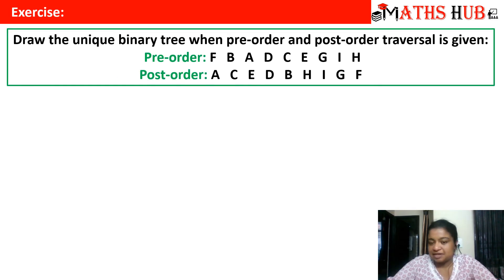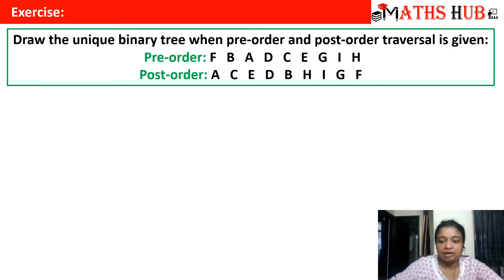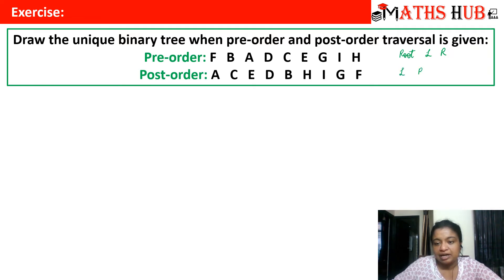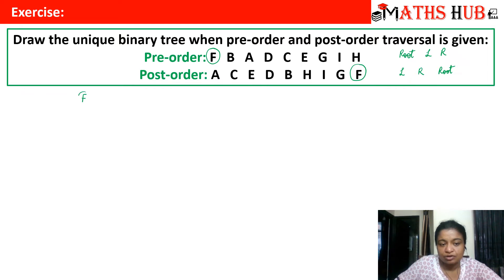Let's do this exercise. You are given the pre-order and the post-order for a tree, and using these we have to draw the unique binary tree. The pre-order traversal follows root, then left, then right. The post-order traversal follows left, right, then root. That means in pre-order the first vertex acts as the root, and in post-order the last vertex acts as the root. Here we have F first in pre-order and F last in post-order, so vertex F will act as the root vertex.